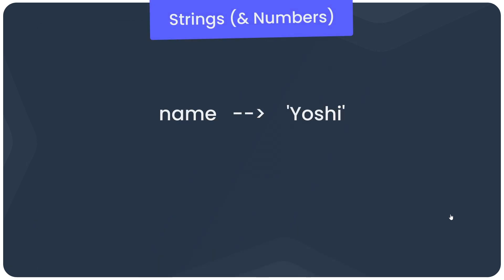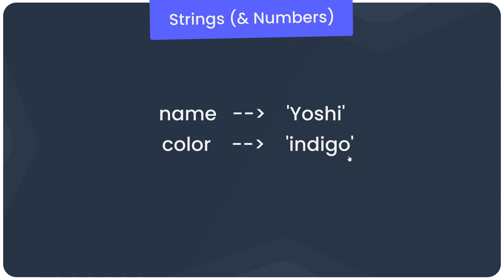The first data type to look at is strings, which is the most simple data type we can store in Redis. A key called 'name' could have a string value like 'yoshi', and a key called 'color' could be 'indigo'. But if we make a key like 'age' and store a number, Redis will also store that as a string. Numbers fetched from Redis are returned in string format.